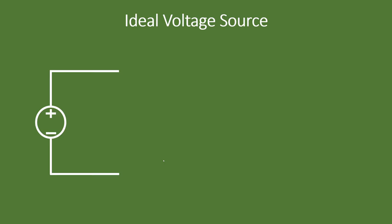If a voltage source is ideal, there are specific characteristics assigned to it. First, the internal resistance, denoted by R, is zero. Second, you can draw any amount of output current. Third, the output voltage of an ideal voltage source remains constant with respect to current, time, or load resistance. There is no resistance connected in series or parallel with this ideal voltage source.